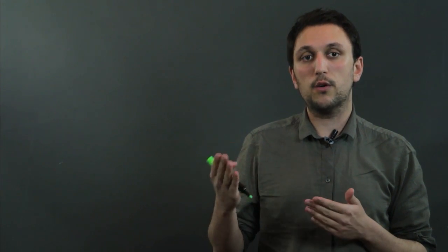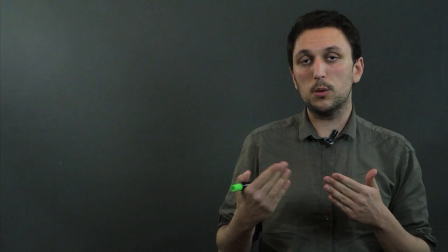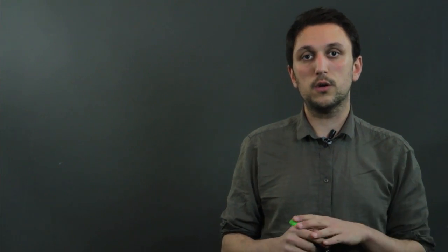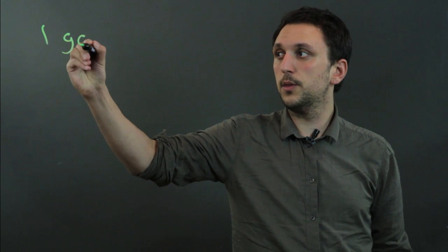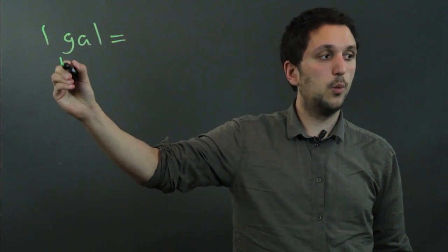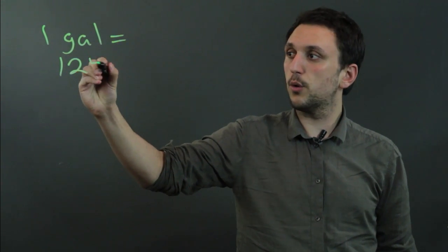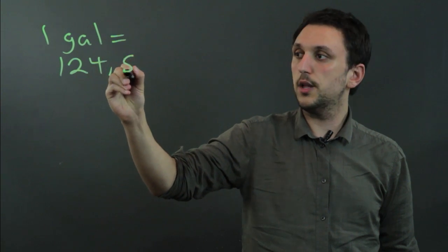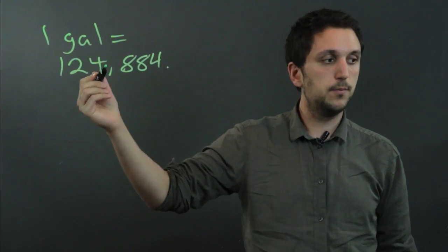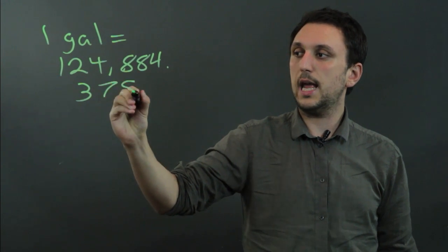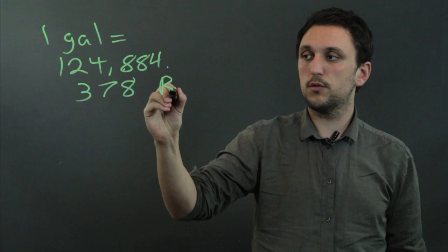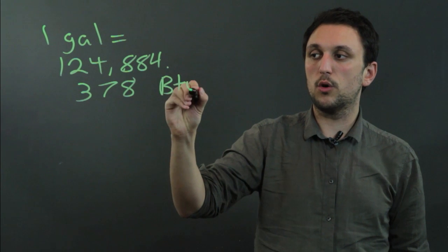Today we're going to learn how to convert a gallon of automobile gasoline to British Thermal Units. One gallon equals 124,884.378 BTUs, or British Thermal Units.